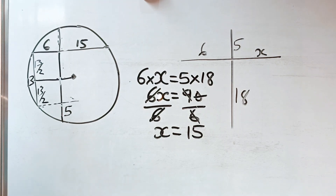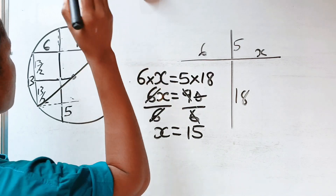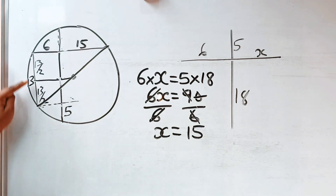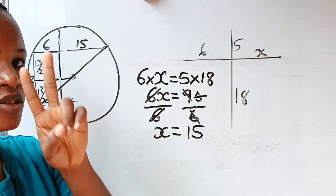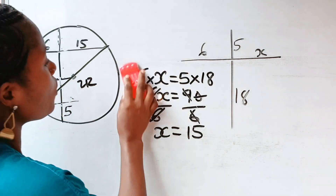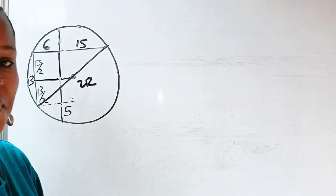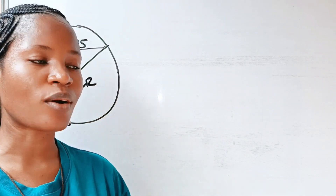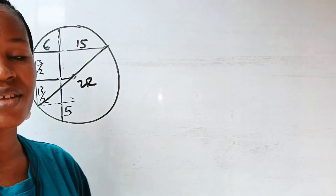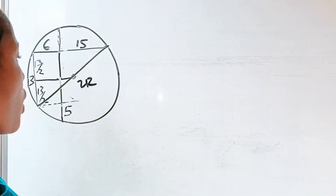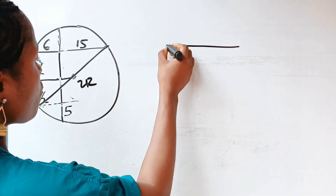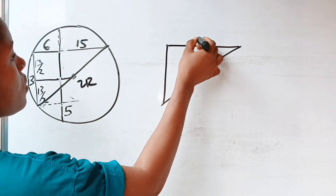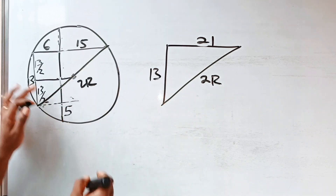Now if we join from here to this point, we already know that this side is 6 plus 15, which gives us 21. We know that here is 13, and from here to here is the diameter 2r. Let me draw the right angle triangle we've formed. So we have 21, 2r, and 13.